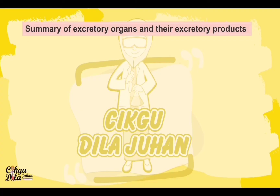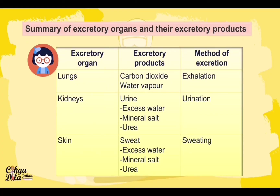This is the summary of excretory organs and their excretory products. Lungs produce carbon dioxide and water vapor through exhalation. Kidneys produce urine, which contains excess water, mineral salt, and urea.